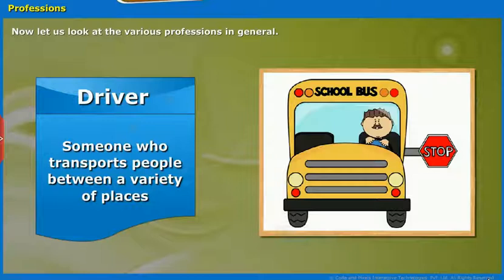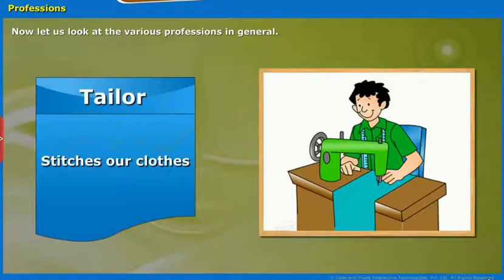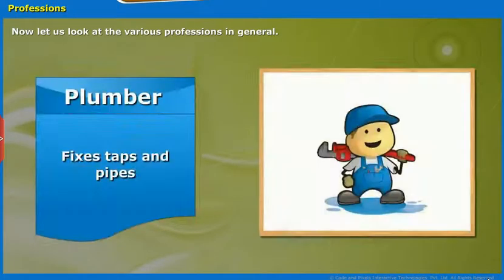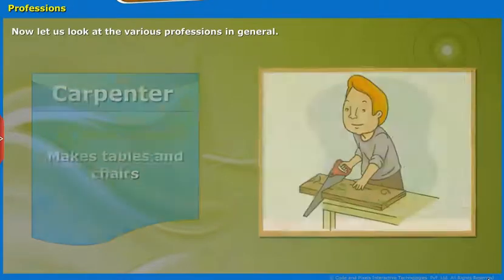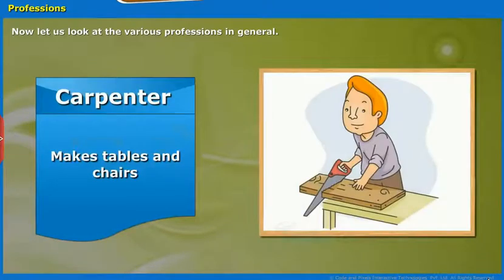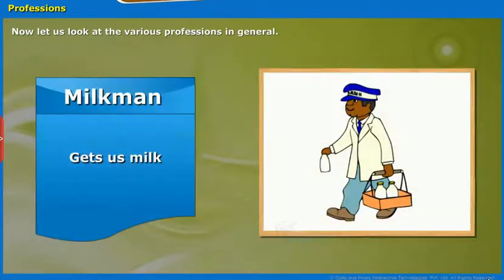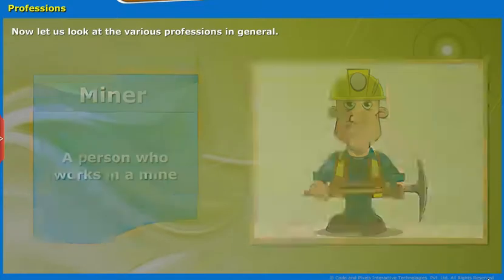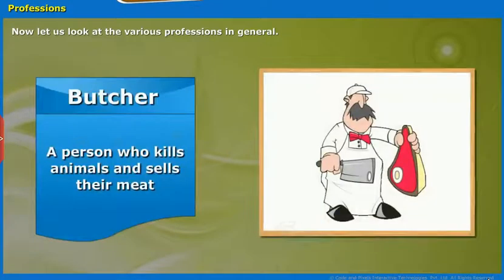Driver: Someone who transports people between a variety of places. Tailor: Stitches our clothes. Nurse: Helps the doctor and the patients. Plumber: Fixes taps and pipes. Carpenter: Makes tables and chairs. Milkman: Gets us milk. Miner: A person who works in a mine. Butcher: A person who kills animals and sells their meat.